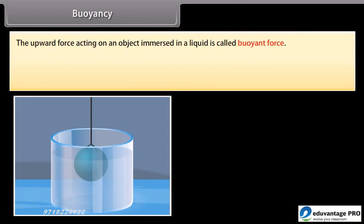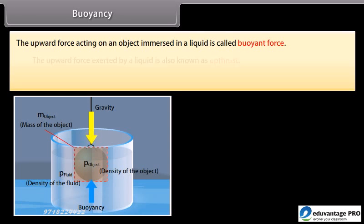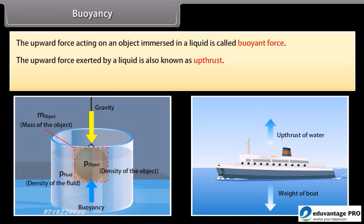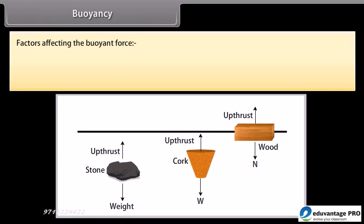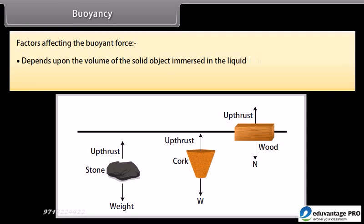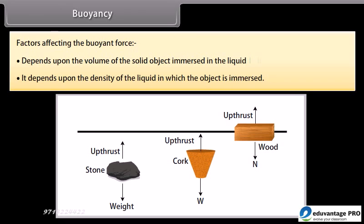Buoyancy: The upward force acting on an object immersed in a liquid is called buoyant force. The upward force exerted by a liquid is also known as upthrust. The tendency of a liquid to exert an upward force on an object placed in it is called buoyancy. Buoyant force depends on the volume of the solid object immersed in the liquid and the density of the liquid in which the object is immersed.